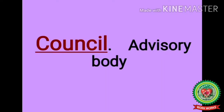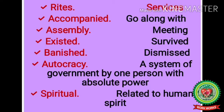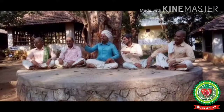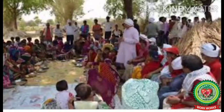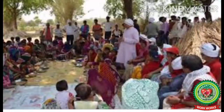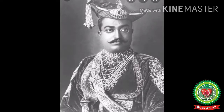Council means advisory body; banished means dismissed; autocracy means a system of government by one person with absolute power. The Sabha was an assembly of elder members of the Jan whose duty was to give advice to the king on important issues. All common people of the Jan were members of the Samiti, and the king was elected by the Samiti. A dismissed king could also be re-elected by the Samiti. Thus, although there was monarchy, the king's powers were limited by the Samiti.